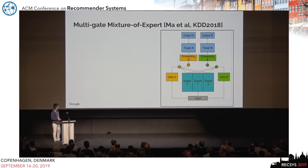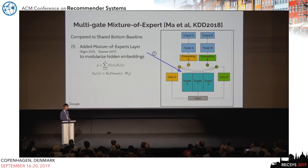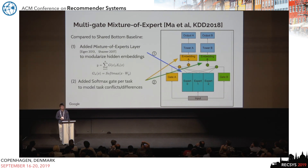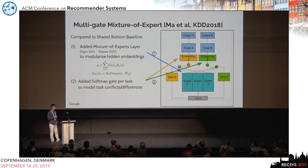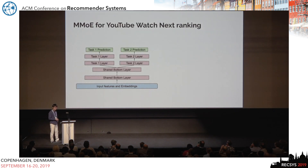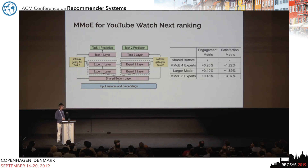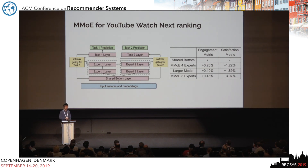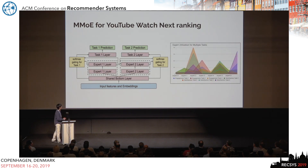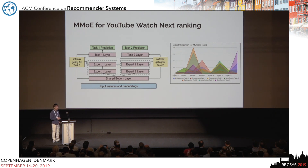Replacing our watch-next ranking model's shared-bottom baseline with the MMoE model shows significant improvement in live experiment results. Even when we increase model size, the gap between MMoE and the shared-bottom architecture grows larger. We also show a visualization of expert utilization per task: engagement tasks naturally share many experts, while the satisfaction task selects a specific subset of experts to share.